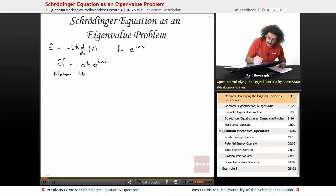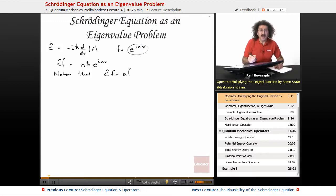Notice that operating on f is the same as multiplying it by a constant. The original function was e to the inx, and the operated function was nh times e to the inx. We ended up just multiplying the original function by some scalar, by some number, positive or negative. So this is the general arrangement: operating on f is equal to some scalar times f.